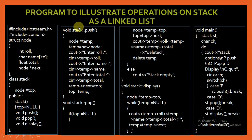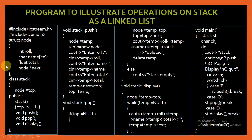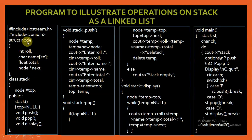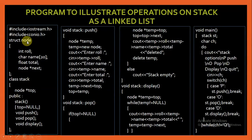Now let us see a program in C++ to illustrate operations on stack as a linked list. In the beginning of the program I have included two header files: iostream.h and conio.h. Now we will create a self-referential structure. In a self-referential structure there are two things: the data part and the pointer part. This is a structure node and it has three data members: role number, name, and float total. And then there is a pointer whose type is the type of the structure itself — the structure is of type node and the pointer next is also of type node. So this structure is called a self-referential structure.